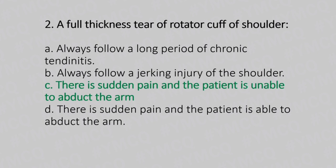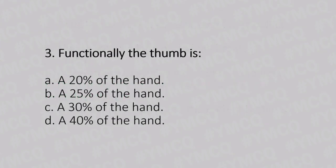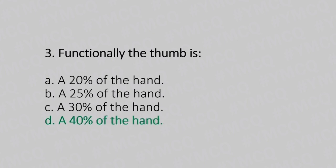Now let's move to question number 3. Functionally, the thumb is. Option A: 20% of the hand. Option B: 25% of the hand. Option C: 30% of the hand. Option D: 40% of the hand. And the answer is Option D, 40% of the hand.